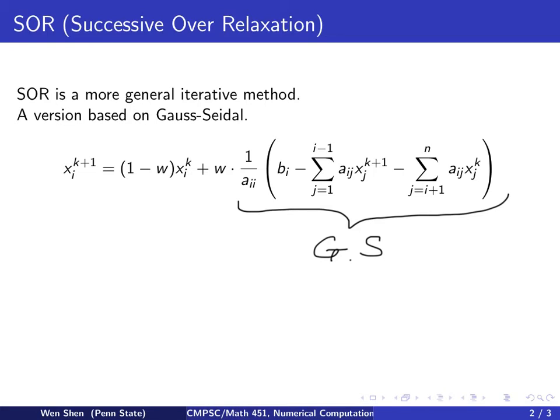Now if w is a value between 0 and 1, then both coefficients here and here will be positive and add up to be 1. So this becomes some kind of a weighted average between xi^k and the Gauss-Seidel.